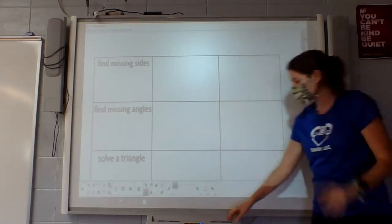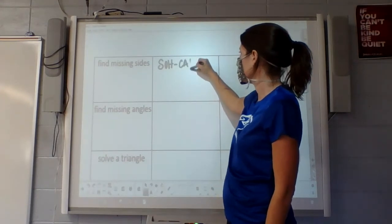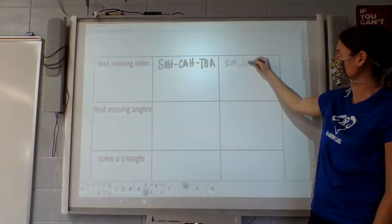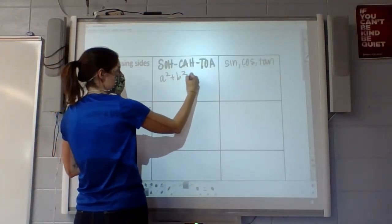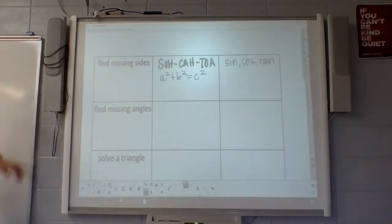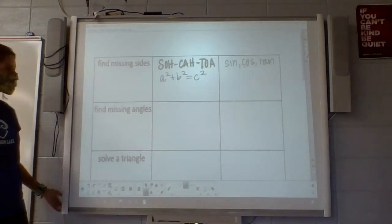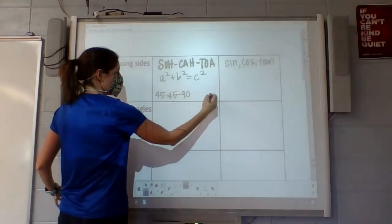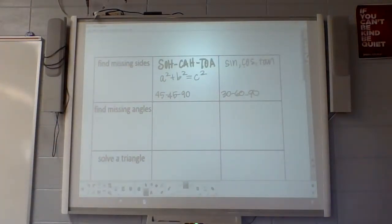So, to find missing sides of triangles, we can use SOH CAH TOA, which is our sine, cosine, and tangent buttons. Or we can also do A squared plus B squared equals C squared. Or we can also do, this is kind of the special case, if with their 45, 45, 90, or 30, 60, 90, those are kind of just those special cases that we know those, but those only work for those two types of triangles. Mostly, we'll use the top two.